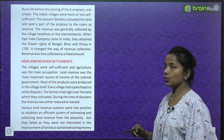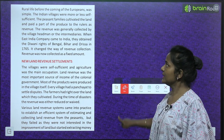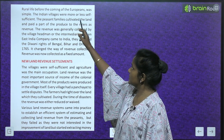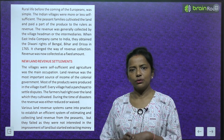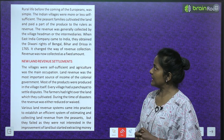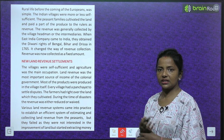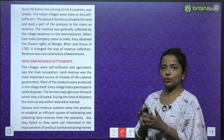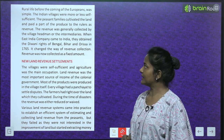Rural life before the coming of the Europeans was simple. The Indian villages were more or less self-sufficient. Peasant families cultivated the land and paid a part of the produce to the rulers as revenue. The revenue was generally collected by the village headmen or other intermediaries.